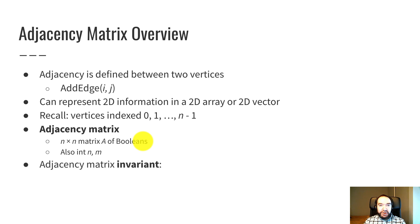And here's the whole point of this. There's an invariant on this adjacency matrix. The invariant says a[i][j] is true when there is an edge from vertex i to vertex j. So we've got this big 2D array. It can have two subscripts, a[i][j].